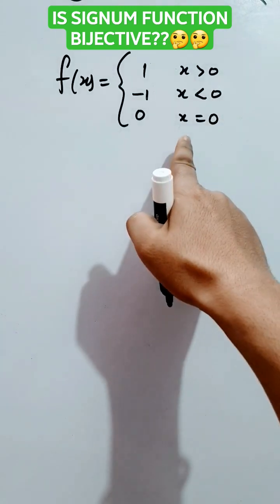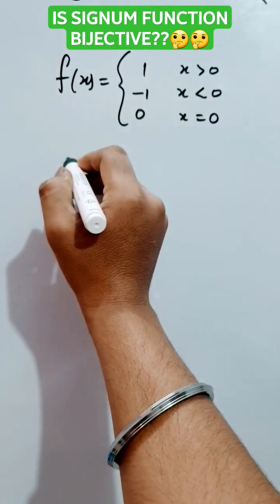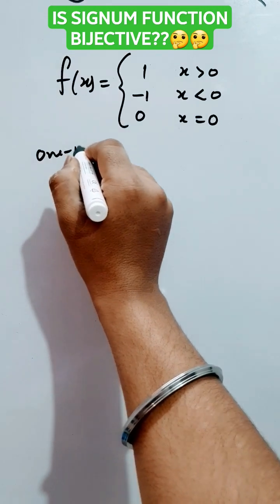Some important questions about this topic is proving this is bijective or not. Checking. First of all, you need to check one-one criteria.